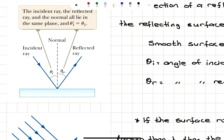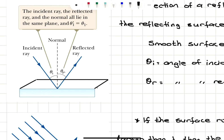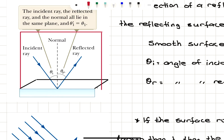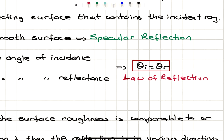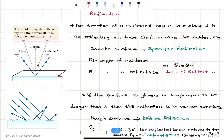So basically we can think about the surface extending like this. The incident ray and the reflected ray are on a plane that is perpendicular to the surface. The angle of incidence and the angle of reflectance, theta i and theta r, are equal to each other. That's called the law of reflection, and this applies for the case of specular reflection.